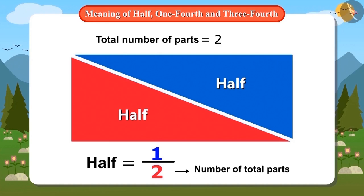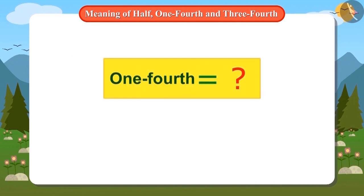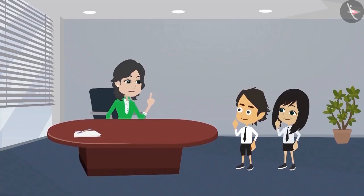Madam, one of these two parts will be called half. Absolutely right. So we will put one above this line. What does it mean? It means one out of two parts. But how do we read it? It is read as one half, that is, one out of two parts.